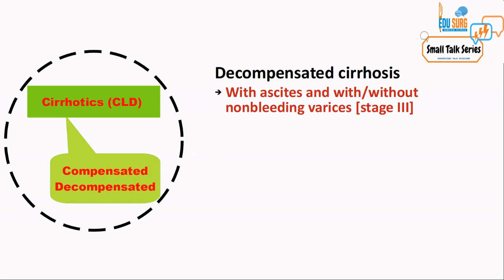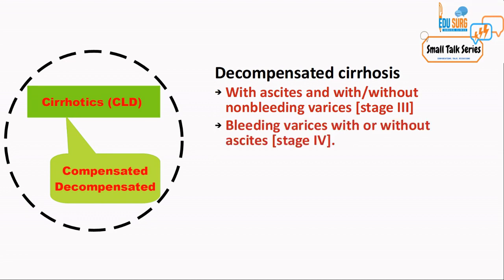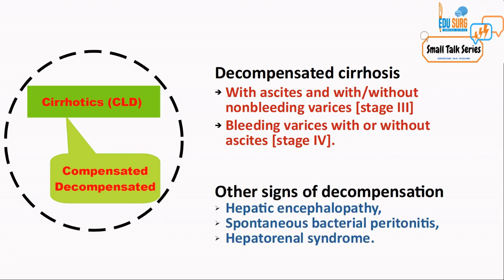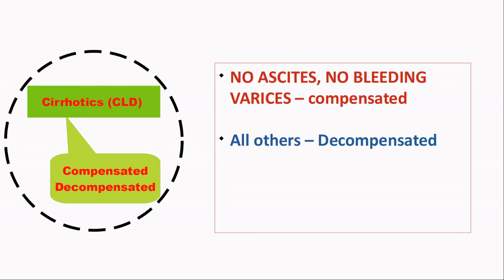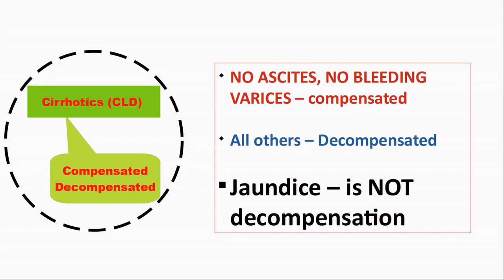Patients with ascites are stage 3, and patients with bleeding varices are stage 4. Stages 3 and 4 are decompensated cirrhosis. Other signs of decompensation include hepatic encephalopathy, spontaneous bacterial peritonitis, and hepatorenal syndrome. To summarize: if your CLD patient has no ascites and no bleeding varices, it is compensated CLD; all other features are decompensation. An important catch: jaundice is a symptom and is not a feature of decompensation.